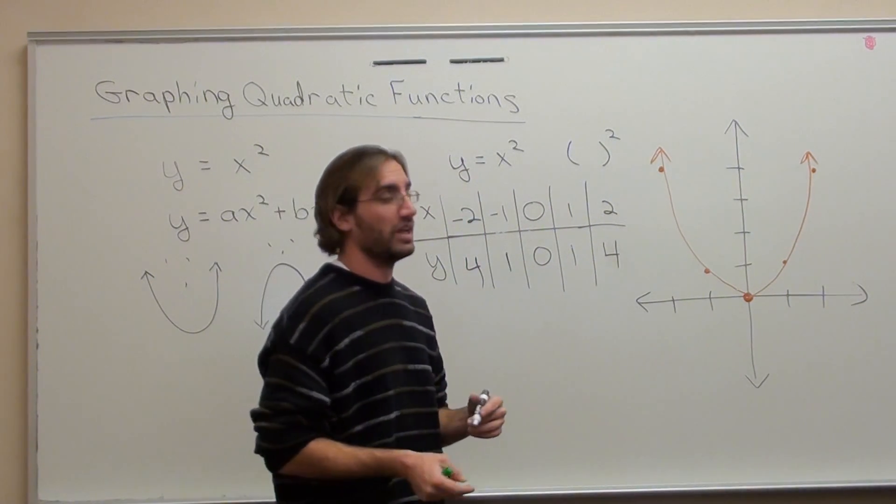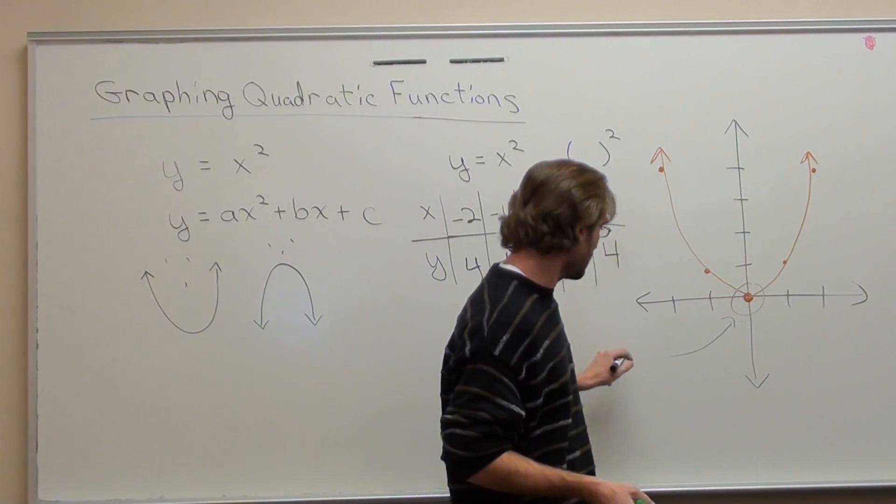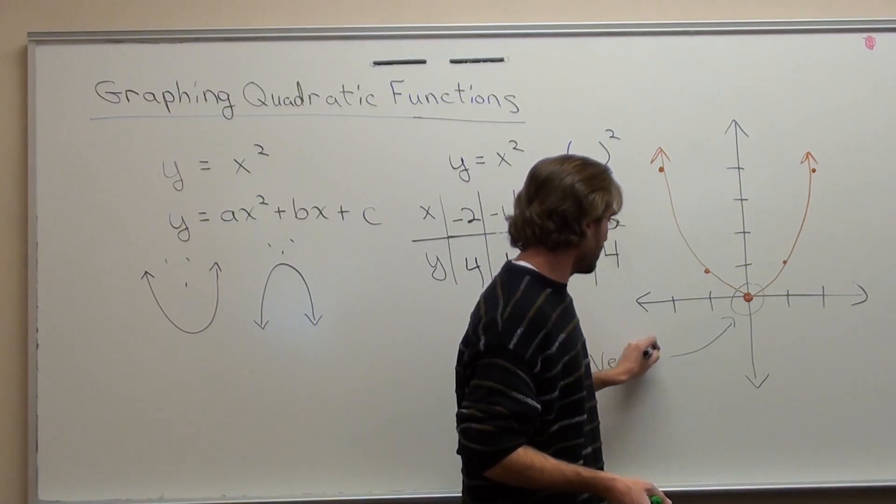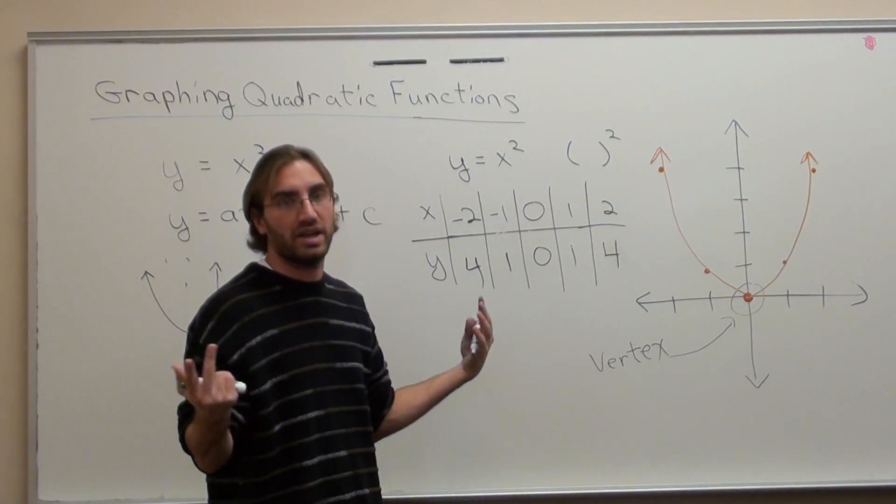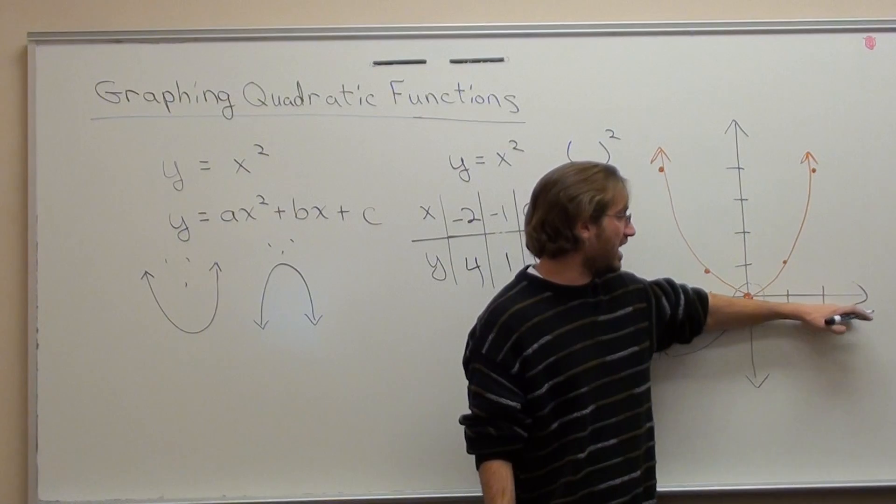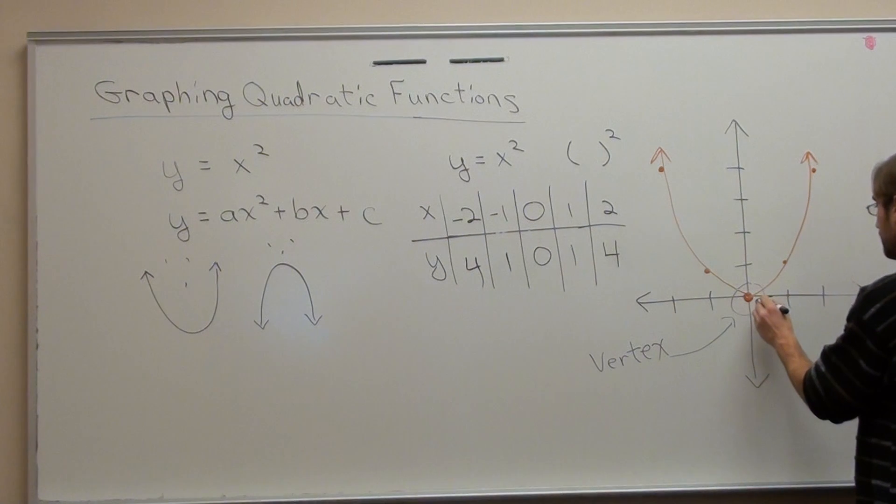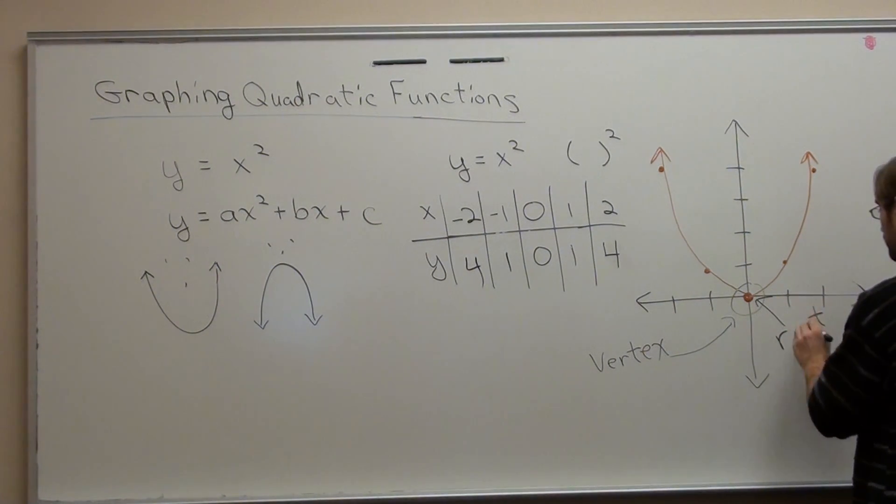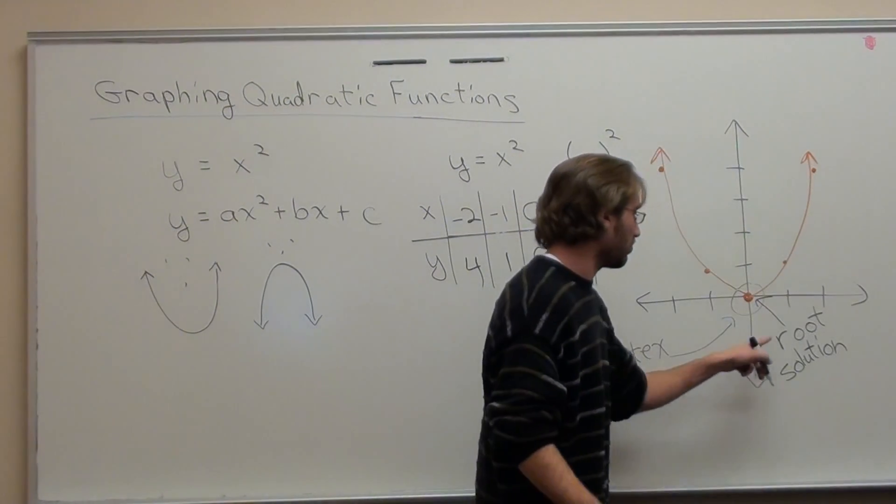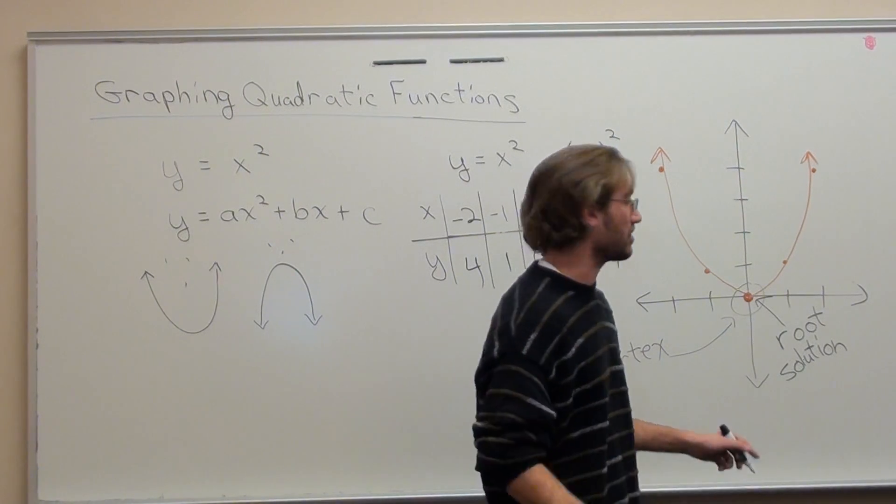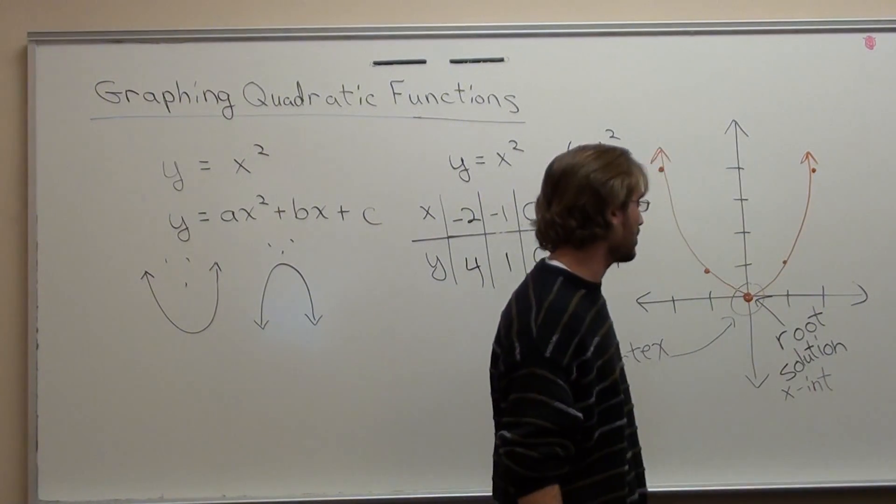Now, a few things that you have to realize. The highest or the lowest point of a parabola is called the vertex. Now, this happens to be the lowest. If it was upside down and it went downwards, then the highest point of the graph would be a vertex. Whenever it hits the x-axis, that's considered one of three words that people usually use. Root solution or x-intercept, where it hits the x-axis.